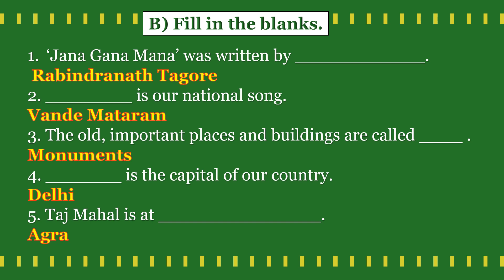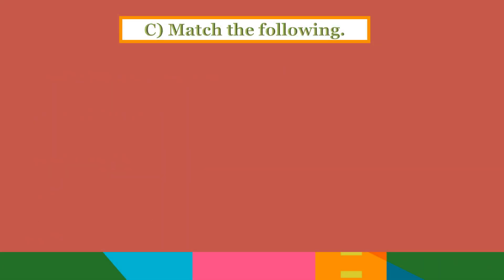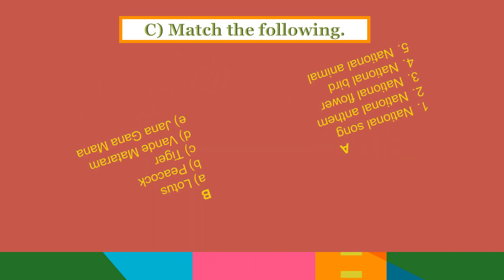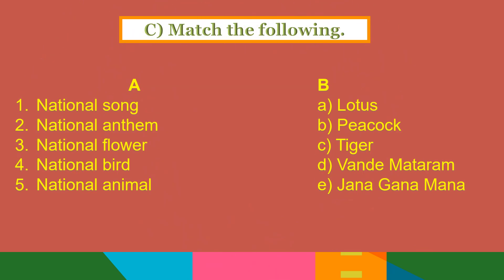So these are your fill in the blanks and their answers. Exercise 3, match the following. Here in column A, some national symbols and so on are given, and in column B their answers are given. We have to match them correctly. First is the national song.